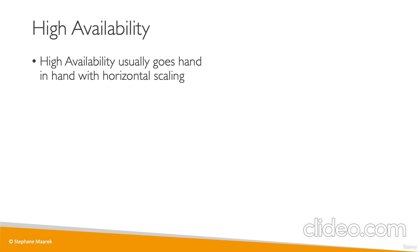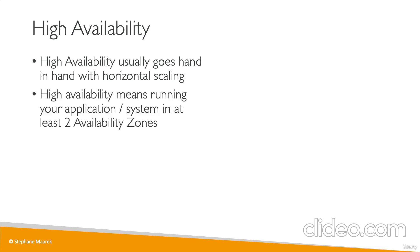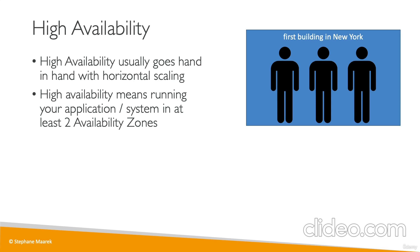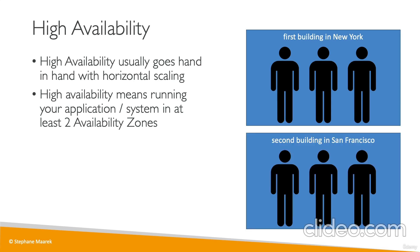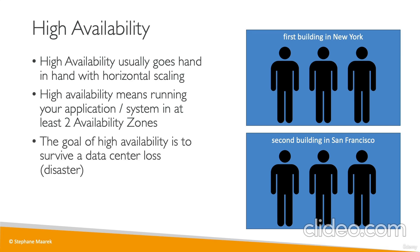High availability goes hand in hand with horizontal scaling. It means running your application and system in at least two availability zones on AWS. For our call center, that means having a call center in New York and a second one in San Francisco. If there's a power outage in New York, we can still take calls in San Francisco. In AWS, the goal is to survive a data center loss or disaster such as an earthquake or power outage.